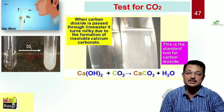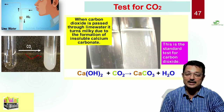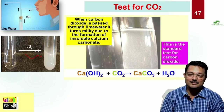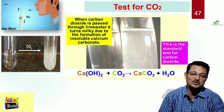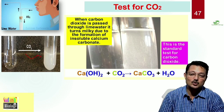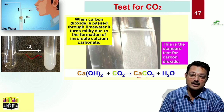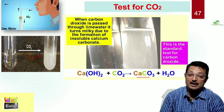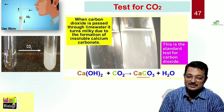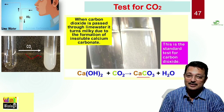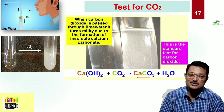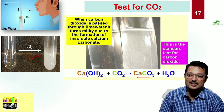Whenever you pass carbon dioxide through lime water, it will become milky. Your chemistry teacher will also teach you that if excess carbon dioxide is passed through, calcium carbonate is not formed; instead, calcium bicarbonate is formed, which is soluble in water. As a result, the milkiness disappears. Calcium bicarbonate dissolves and the milkiness also disappears. You can try this activity.